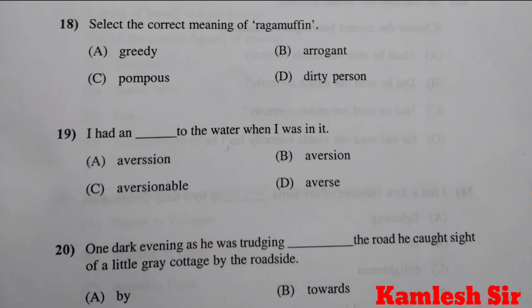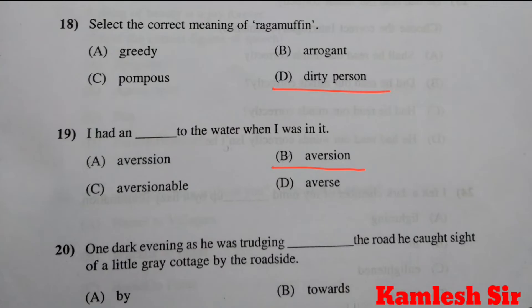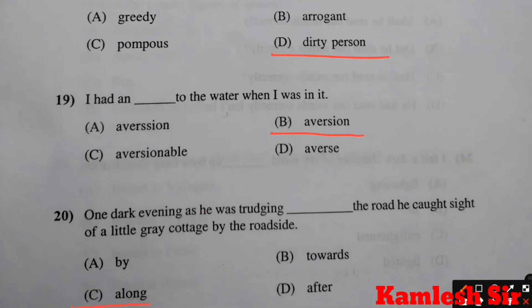Question number 18: Select the correct meaning of ragamuffin. The right answer of question number 18 is D, dirty person. Question 19: I had a dash to the water when I was in it. Answer is B, aversion. Question 20: One dark evening as he was trudging dash the road he caught sight of a little grey cottage by the roadside. Answer is C, along.